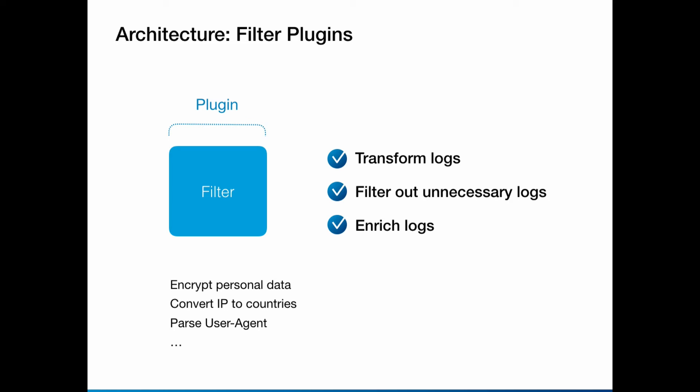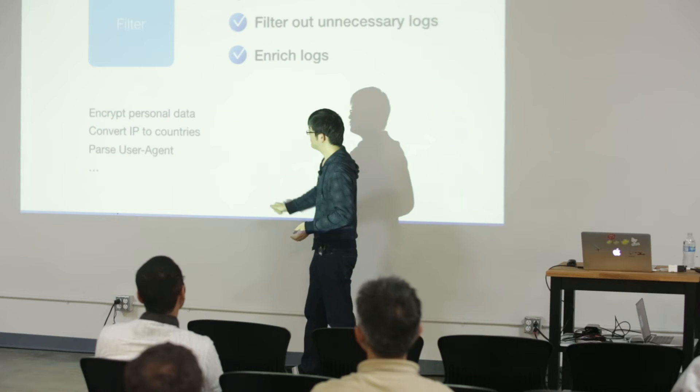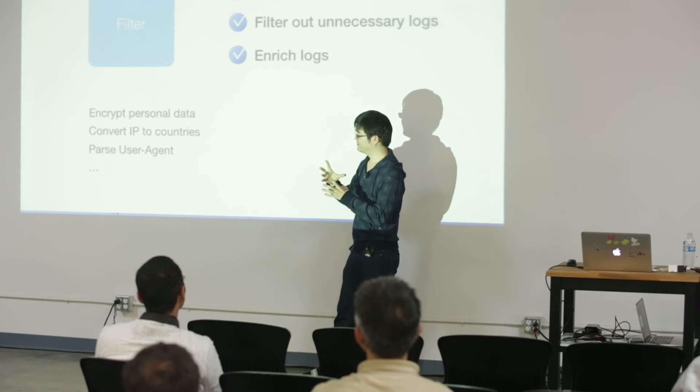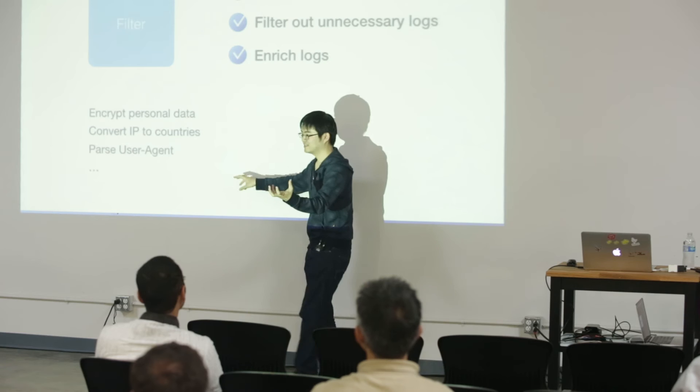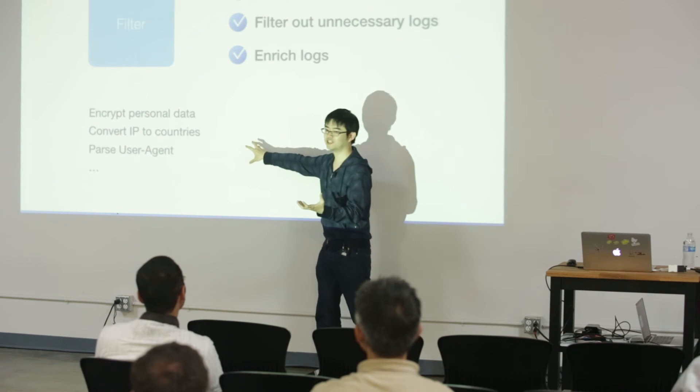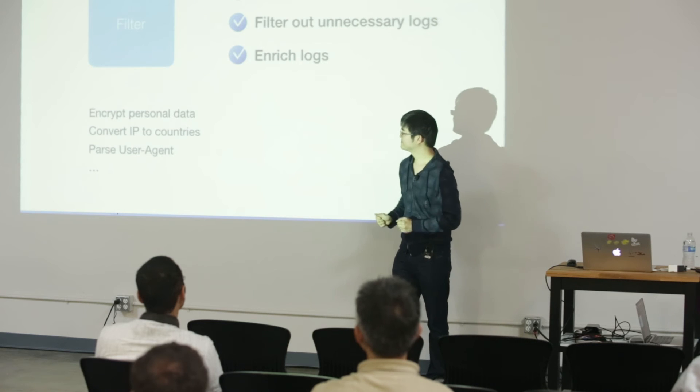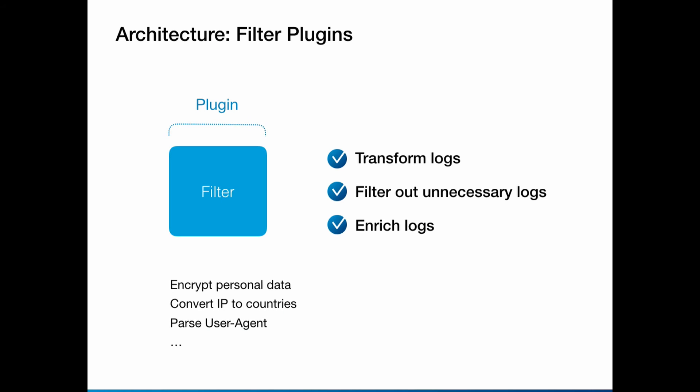Next is the filter plugin — this is optional. You can apply zero or more filter plugins. What a filter plugin does is conversion of the data. For example, if you have data that includes passwords or personal information, you don't want to post that to cloud services. You can use an encryption filter plugin to encrypt a single field of the data. Or you can convert an IP address into a country or region name. Or if you're using Nginx and the tail plugin, you can convert the user agent into browser name, browser version, or OS version. It's enrichment of the logs.